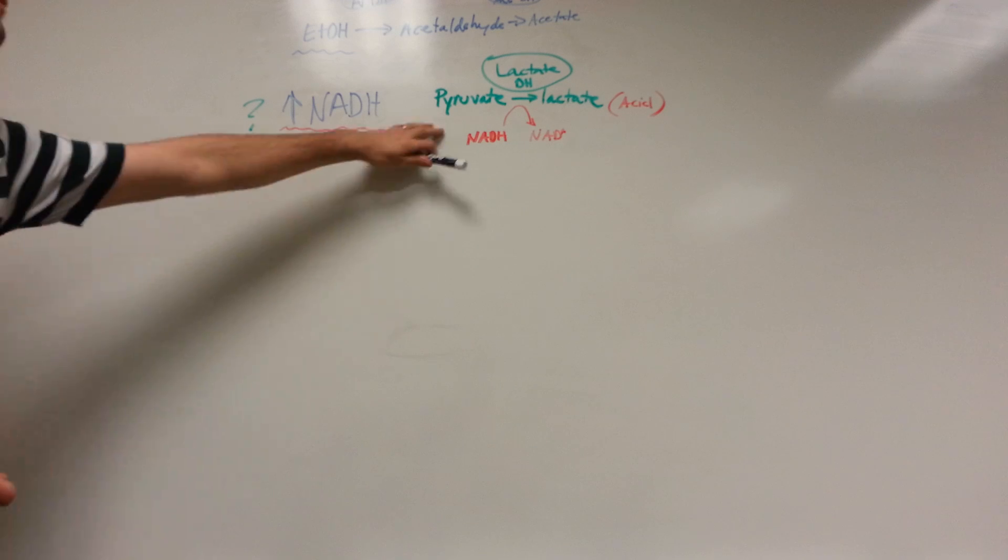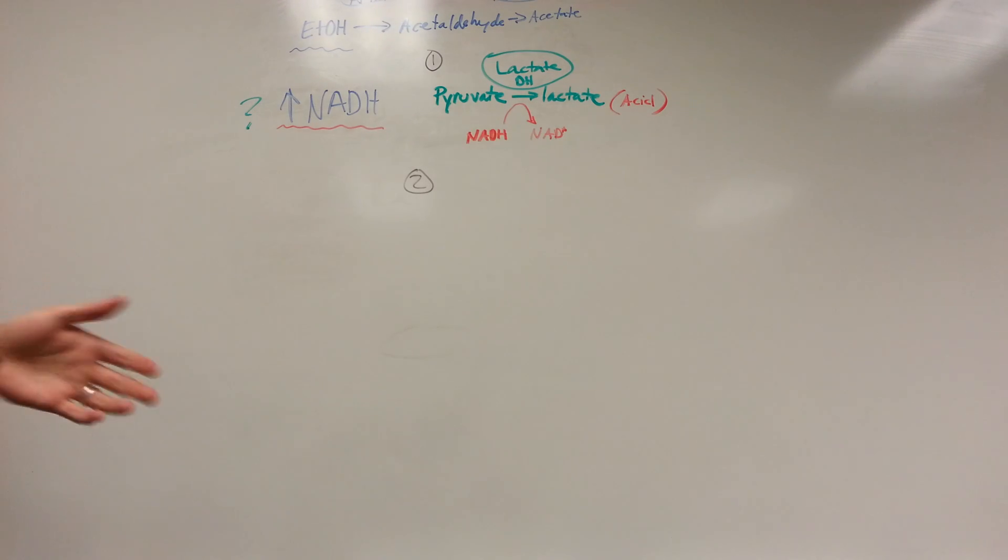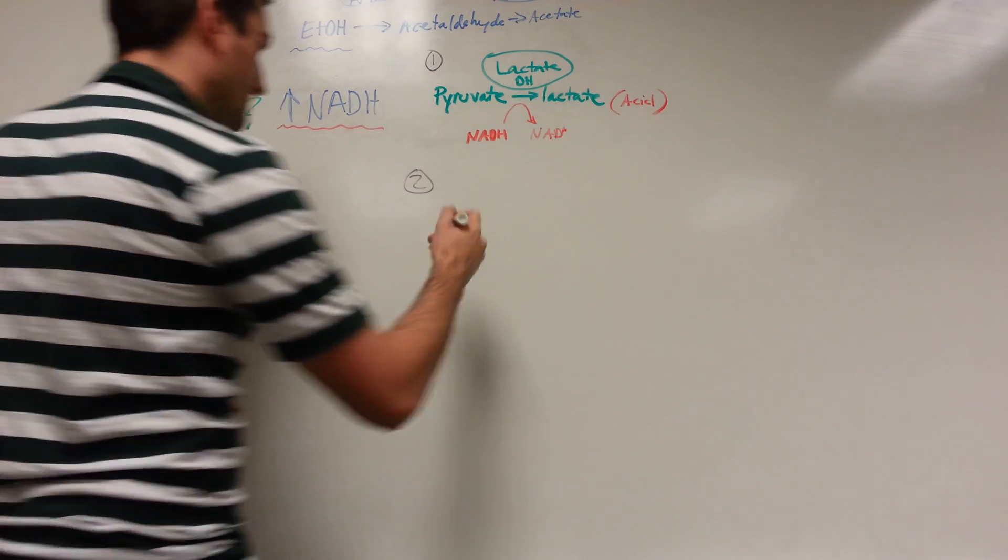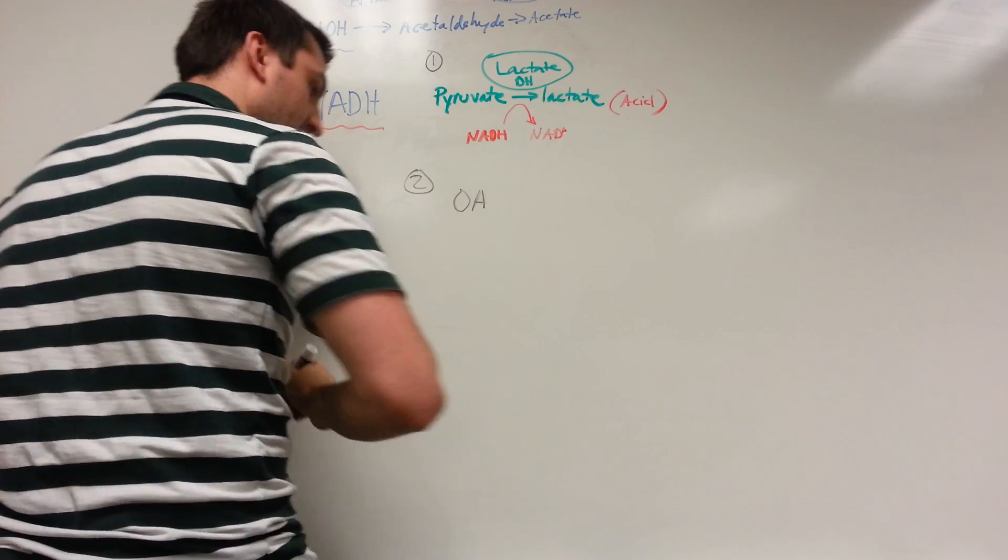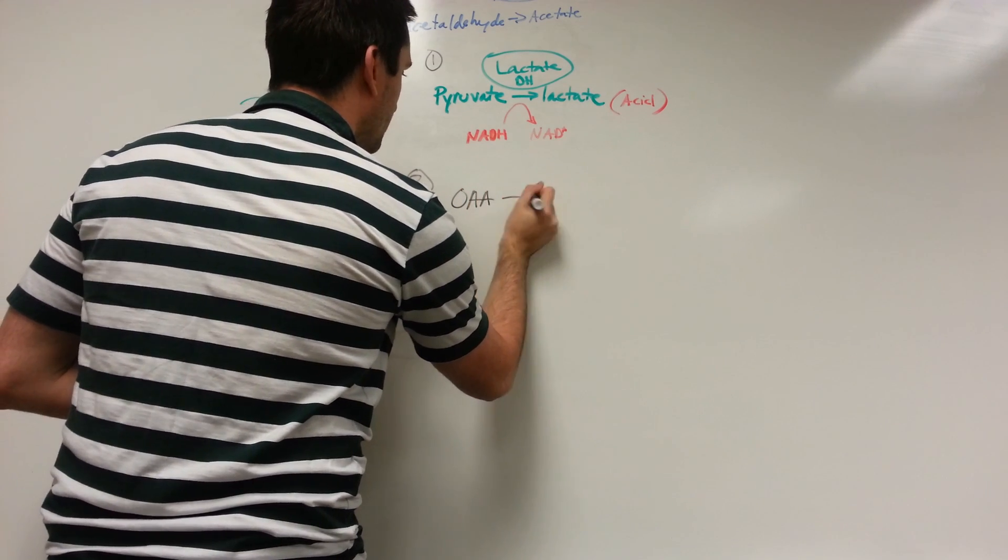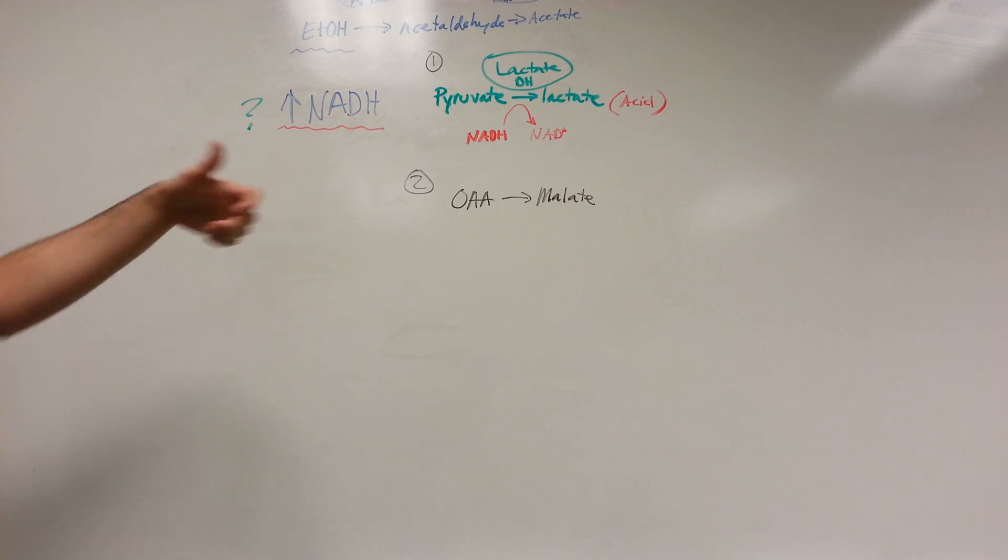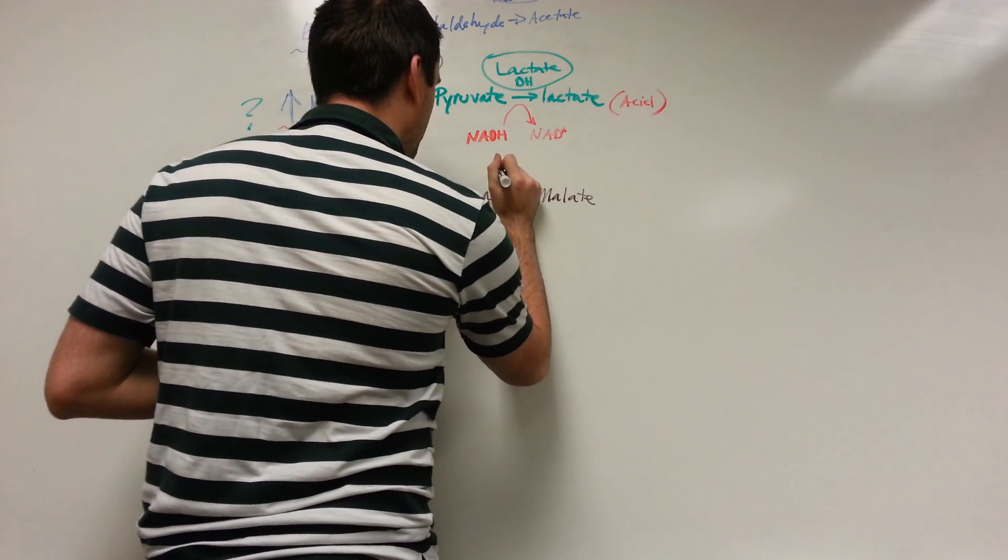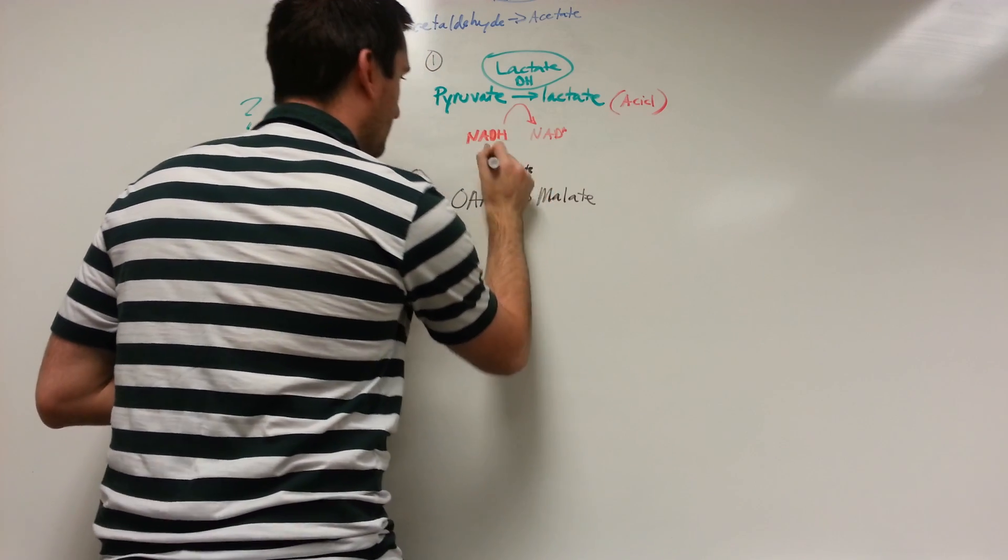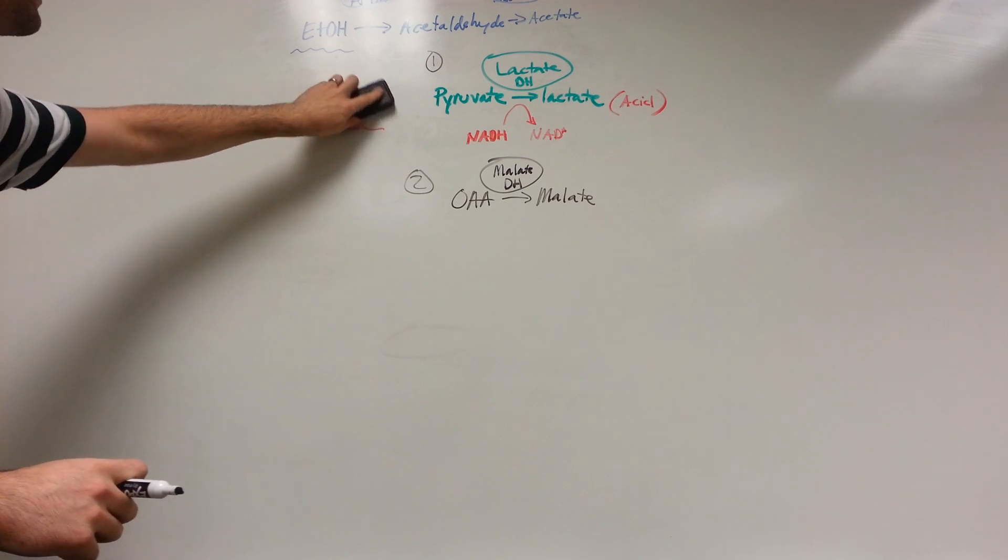So now where can we go from here? Well, there's another pathway that the body is going to use. We have option one here. We also have another option the body can use to help break down this NADH into a more usable form. That's going to be using malate dehydrogenase. This is going to be the conversion of OAA to malate. If these look familiar to you, it's because we already talked about them. This is going to be in the TCA cycle, but this is actually in reverse.